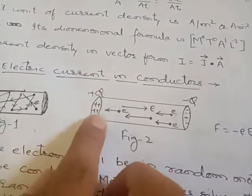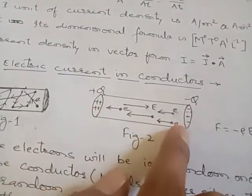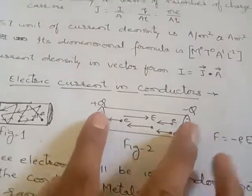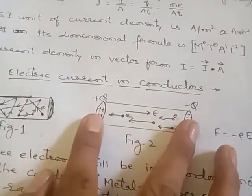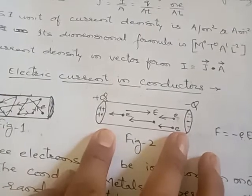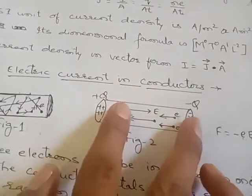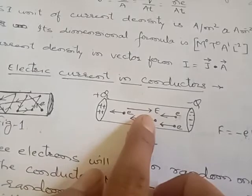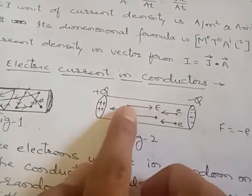We have seen that one positively charged plate and one negatively charged plate are connected. Because we are connecting the potential, we will see that there is an electric field generated. In which direction is the electric field generated?